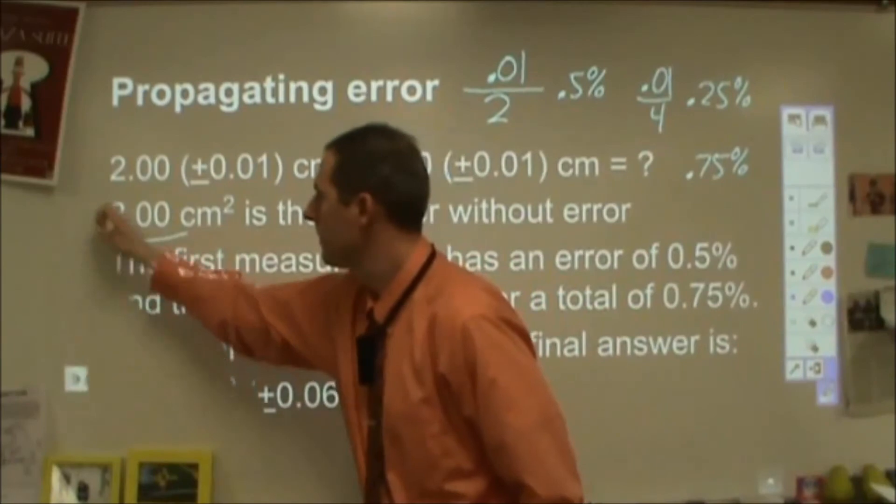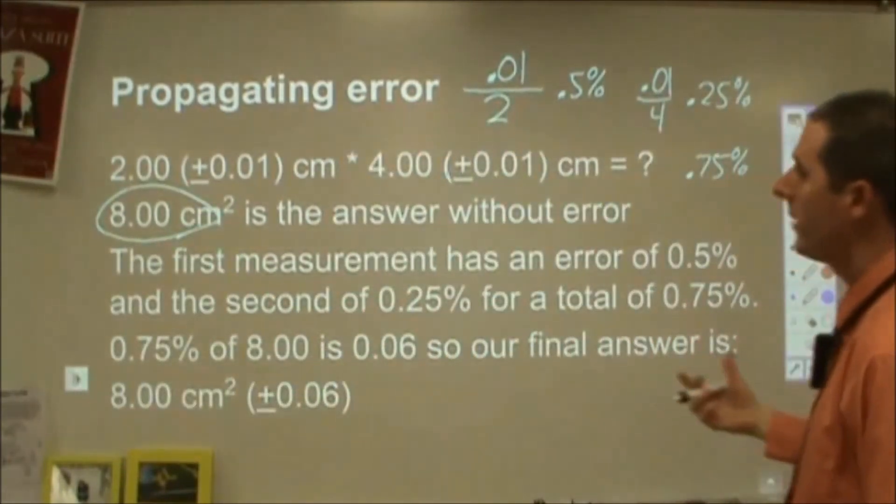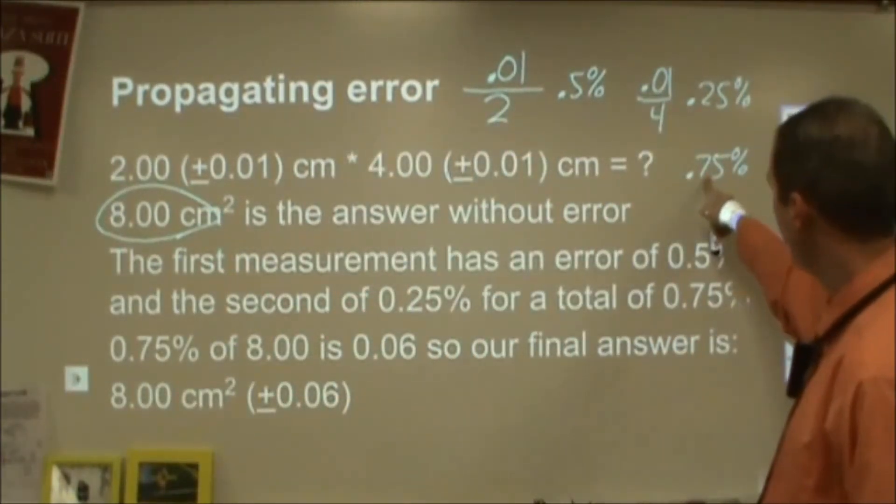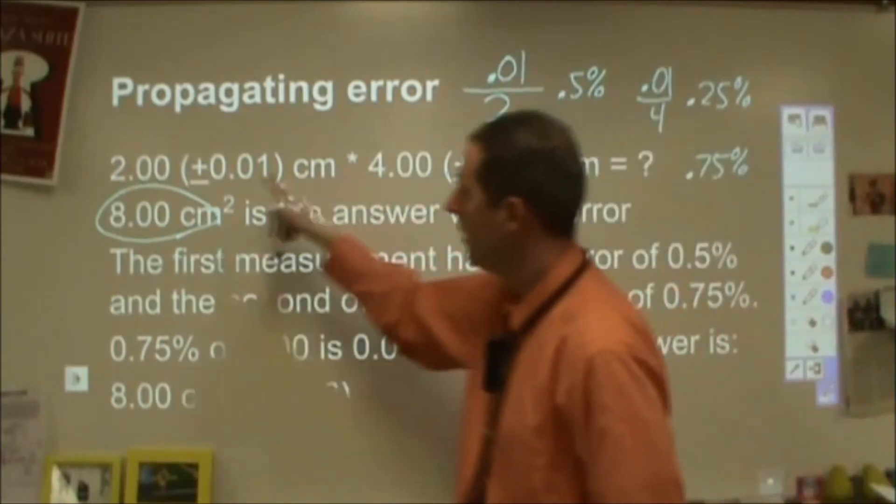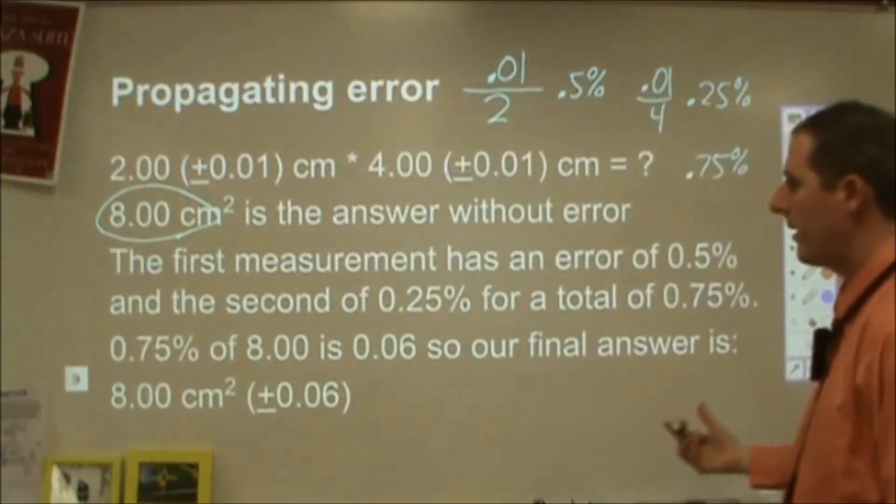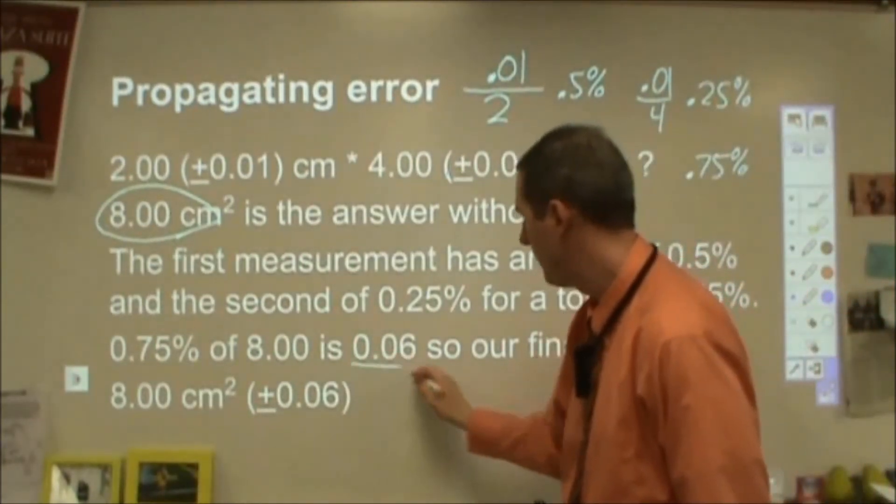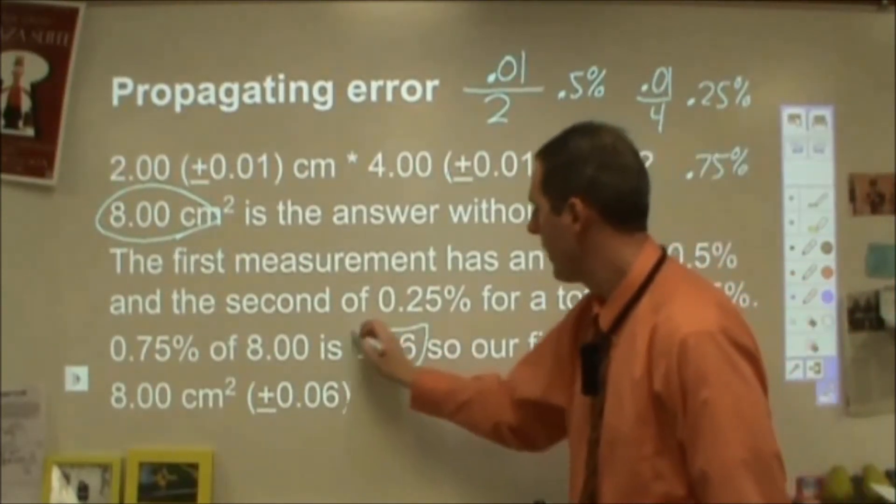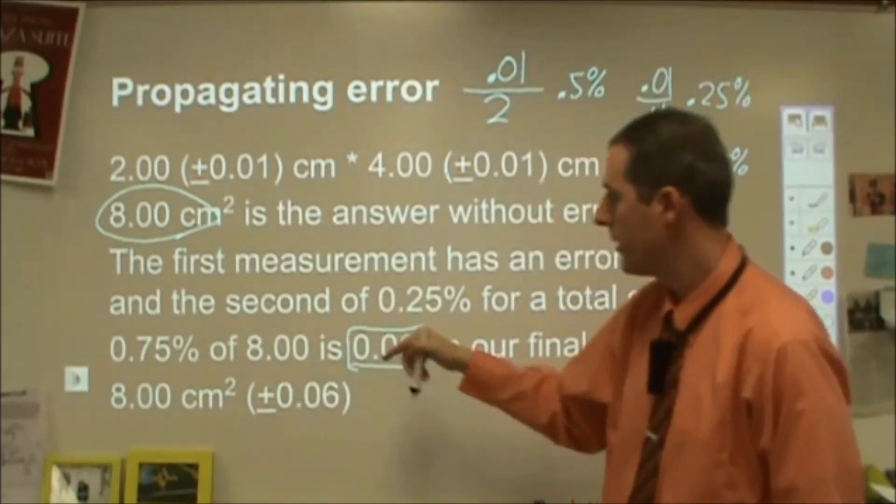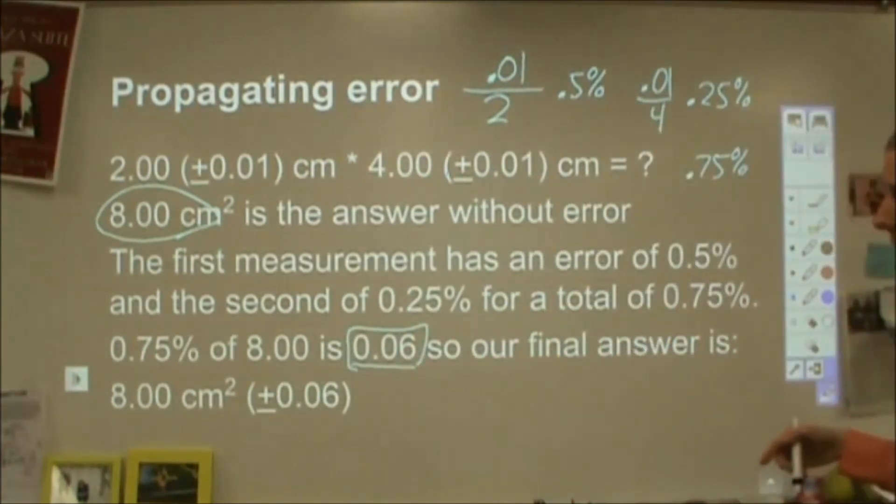Now my final answer is 8. 0.0075 times 8, and then I would use that as my range. And so that comes up to 0.06 when I do that. So my final answer is 8.00 (±0.06) cm².